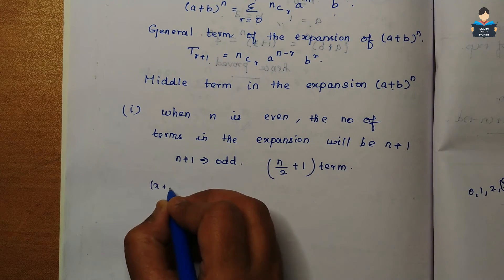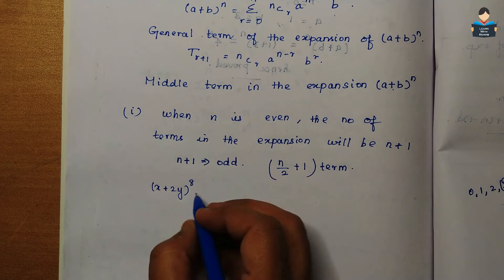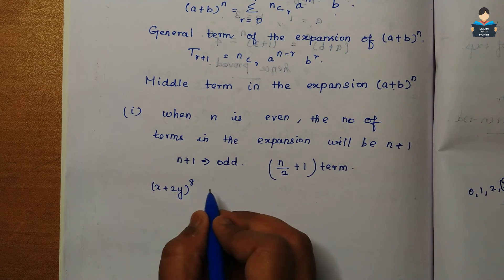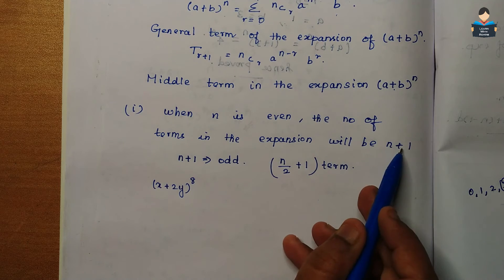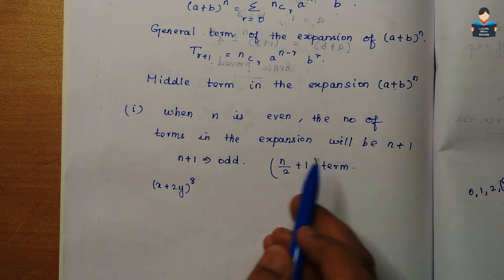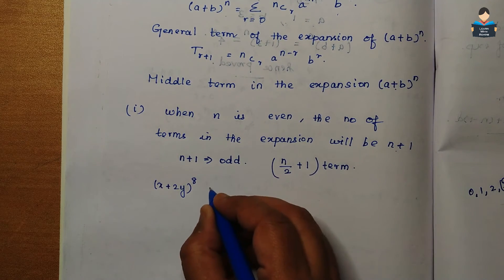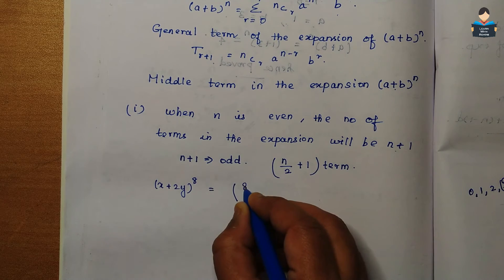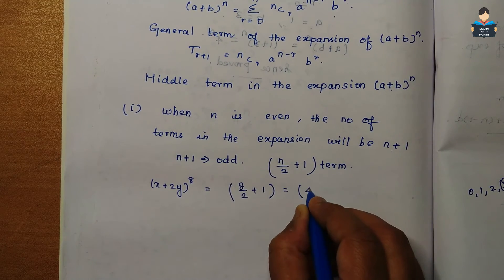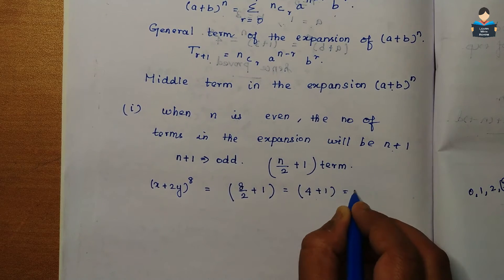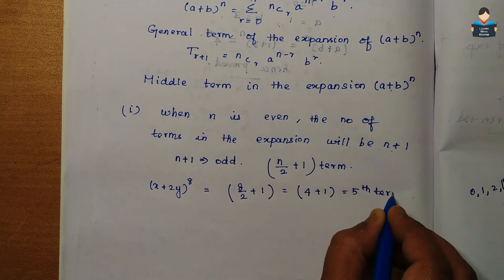For example: (x + 2y)^8. n is even, so the number of terms in the expansion is n + 1 = 9. The middle term is the (8/2 + 1) = 4 + 1 = 5th term.